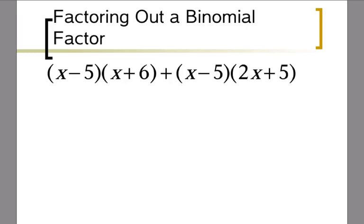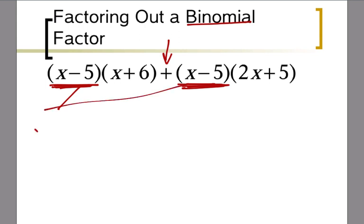In this lesson we're going to continue our discussion on greatest common factors, but our greatest common factor is going to be a binomial this time. Instead of having one number or variable we can pull out, we're going to notice in this problem that between the plus signs each one of these has an x minus 5. That means we're going to pull out an x minus 5 and write the leftovers in our parentheses.